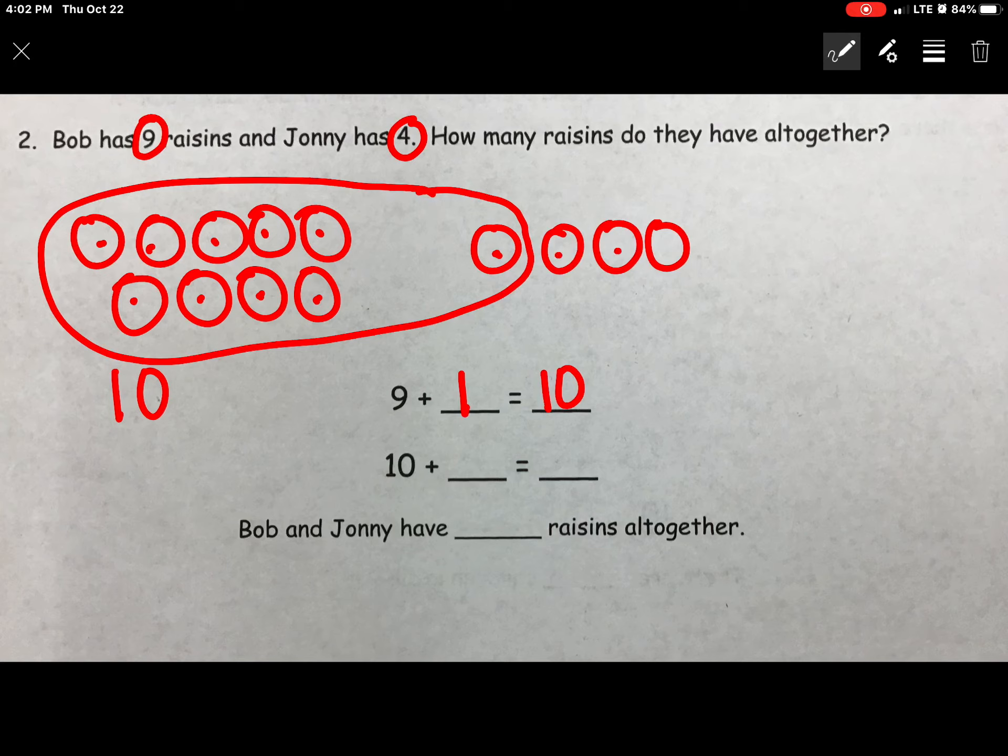And that is 1, 2, 3. Again I'm going to label it 3. 10 plus 3 for my two groups is going to equal 13. So Bob and Johnny have 13 raisins.